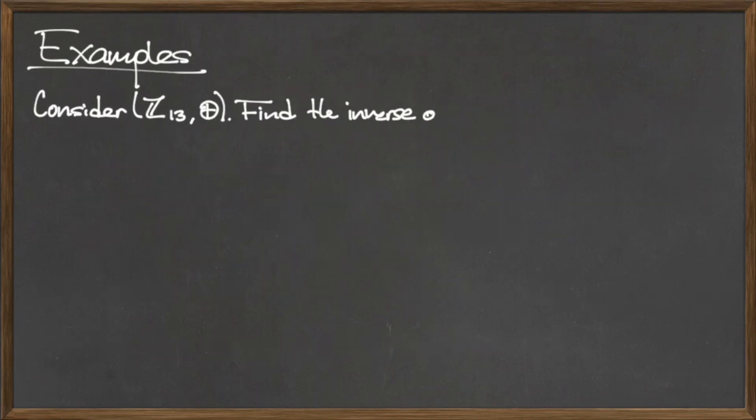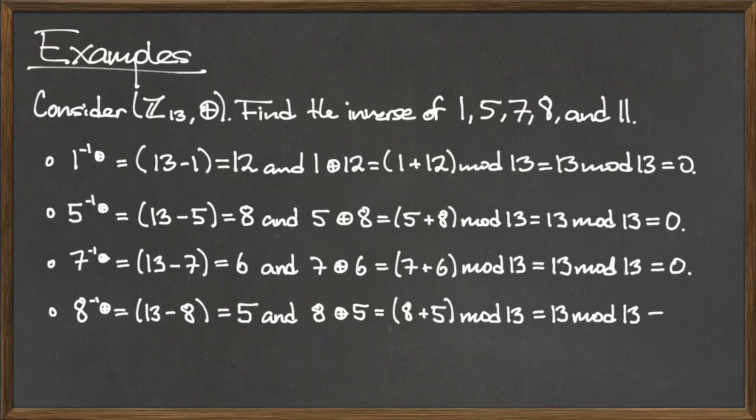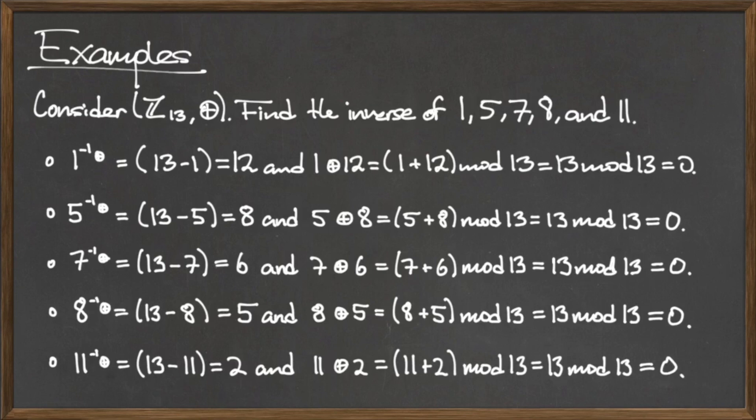As an example, consider the set of integers mod 13 under the binary operation ⊕ as stated previously. In this set, find the inverse elements of 1, 5, 7, 8, and 11.